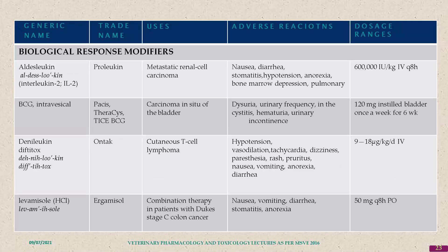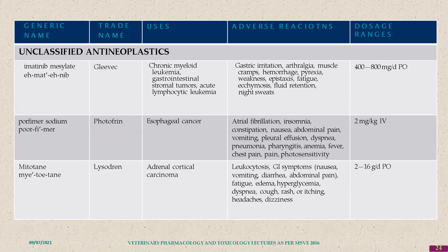Biological response modifiers include aldesleukin, used in metastatic renal cell carcinoma. BCG is used in intravesicular carcinoma of bladder tissue. Denileukin is used in cutaneous T-cell lymphoma. Levamisole, a systemically acting anthelmintic, is used in combination therapy for Duke's stage colon cancer. Unclassified antineoplastics include imatinib for chronic myeloid leukemia, porfimer for esophageal cancer, and mitotane for adrenal cortex cancer.